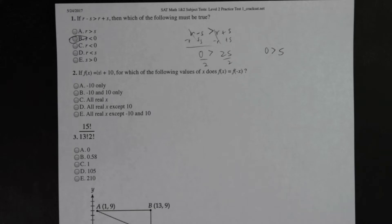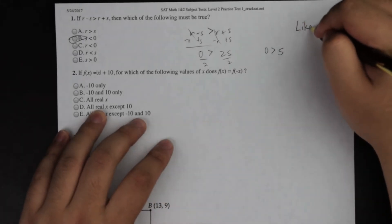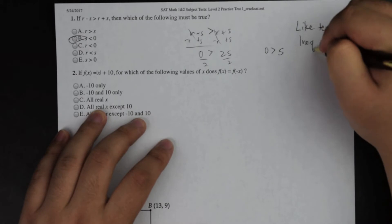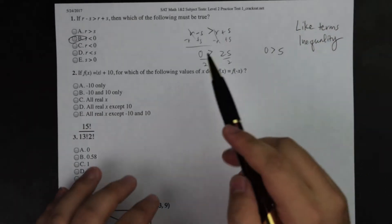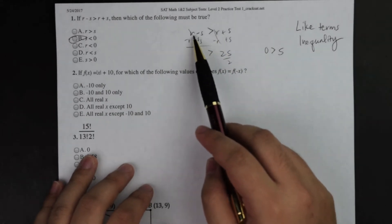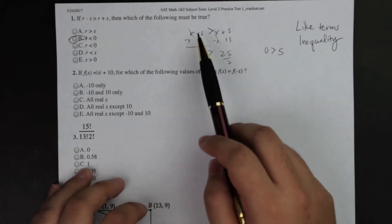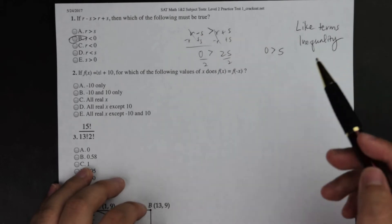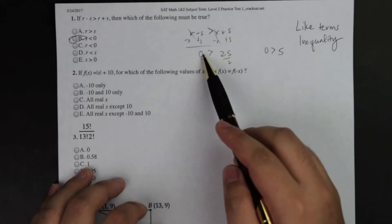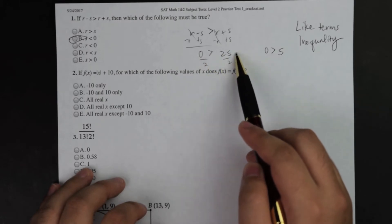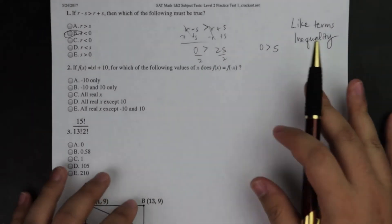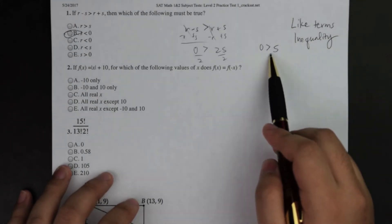It's a two-way inequality equation. The main idea is that I need to make sure I keep up with like terms. I first rewrote the equations. Afterwards, I moved all the R's to one side, moved all the S's to the other side, and simplified. Eventually I got zero is greater than two times S. So I divided by two because zero divided by two will be zero, but S will stay the same. So zero is greater than S.